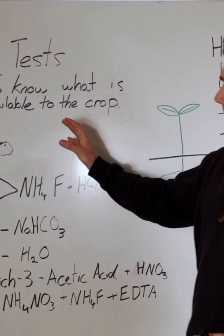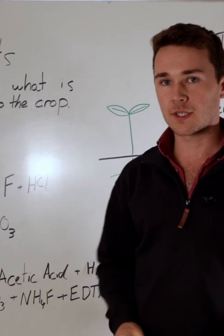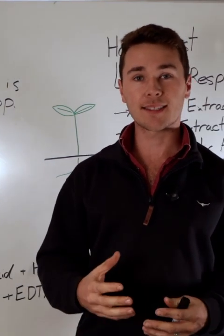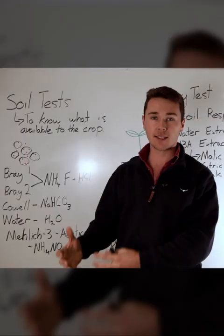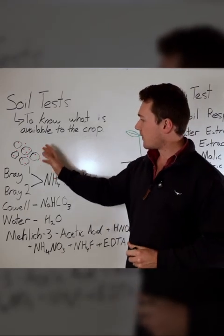For example, we have our soil particles here and the red bits on this represent a nutrient. We're trying to understand how much of that is available to the crop, and not all of this is available to the crop.